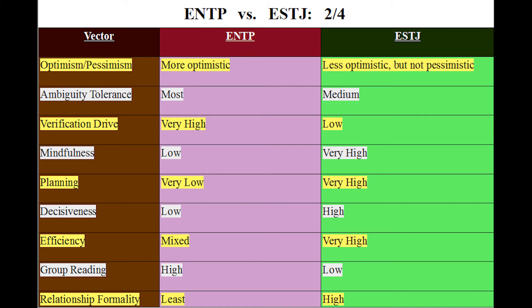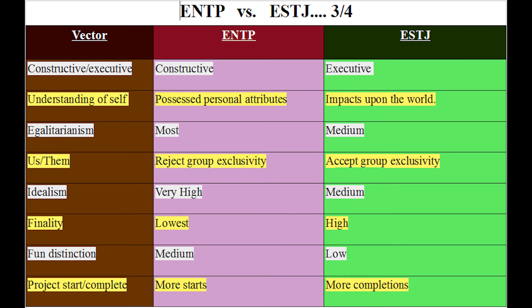Relationship formality: ENTPs don't like formality in relationships at all. Kids can call me Eric or whatever they want — I'm not their boss, I'm their helper. Work style: ENTPs are constructive — making it up as you go, the stir-fry method. ESTJs are executive — following a plan, the baking method. Understanding of self: ENTPs see themselves as personal attributes they possess; ESTJs see themselves in terms of their impacts upon the world.